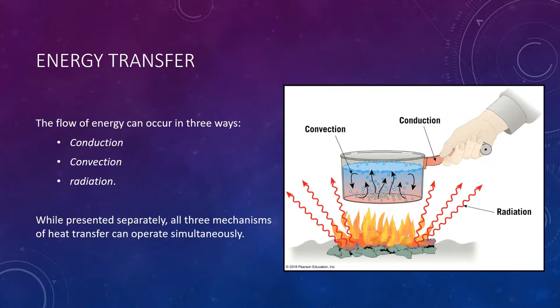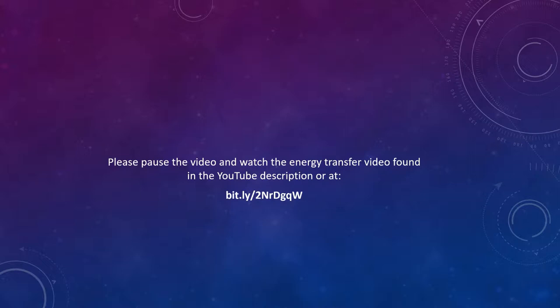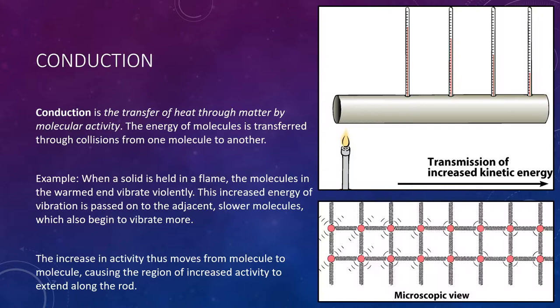Working in tandem, these processes may transfer heat between the Sun and Earth, and between the Earth's surface, the atmosphere, and outer space. Please pause the video and watch the linked video showing the different types of energy transfer, but we will step through them as well.